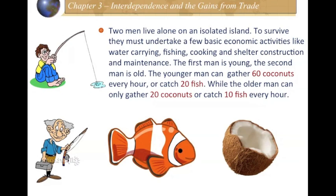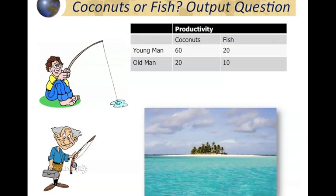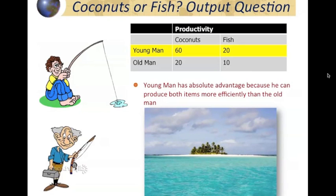The easiest way to approach these questions on the AP exam or end-of-course test is to put them into a table. We can look at these two people and what they're producing. Because the young man has the ability to maximize more output in all phases — both coconut and fish production — we say that this young man has what we call an absolute advantage. He is just absolutely better than the older man.